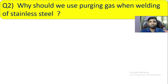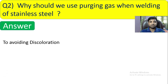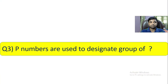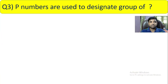Question number 2: Why should we use purging gas when welding stainless steel? The answer is to avoid discolouration. The purging gas is used when welding stainless steel to avoid discolouration.